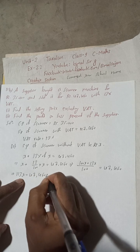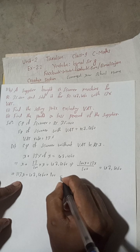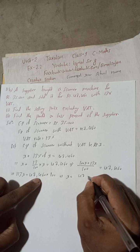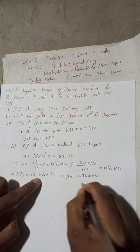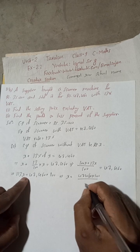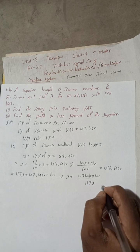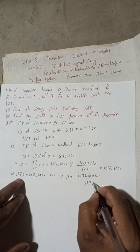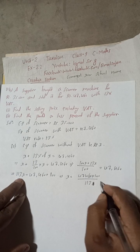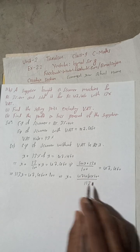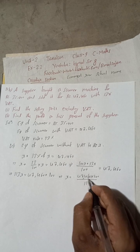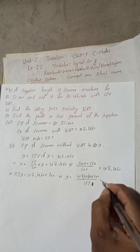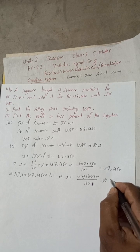So this will have 113x is equal to 47,460 × 100. So sorry, this 113x will come here. So when you multiply 47,460 × 100 divided by 113, you will get here Rs. 42,000.